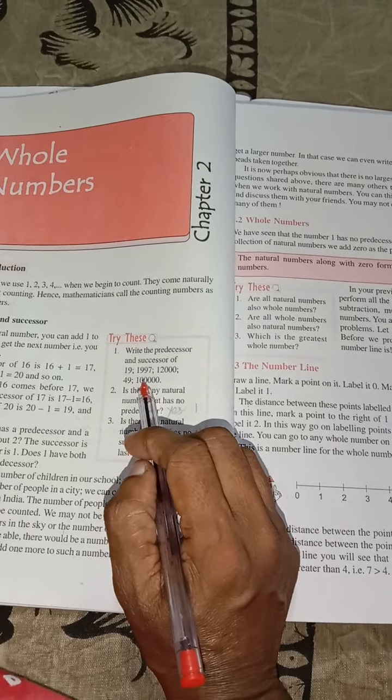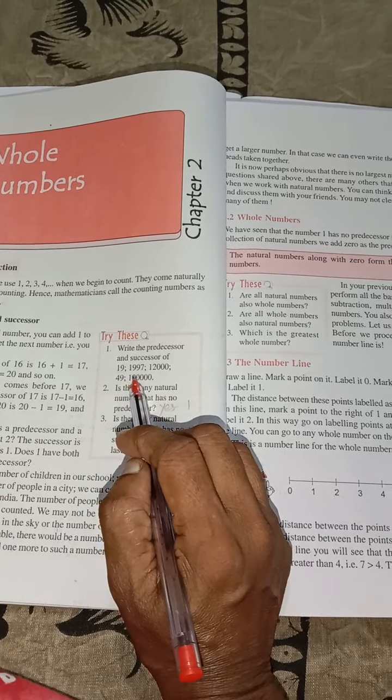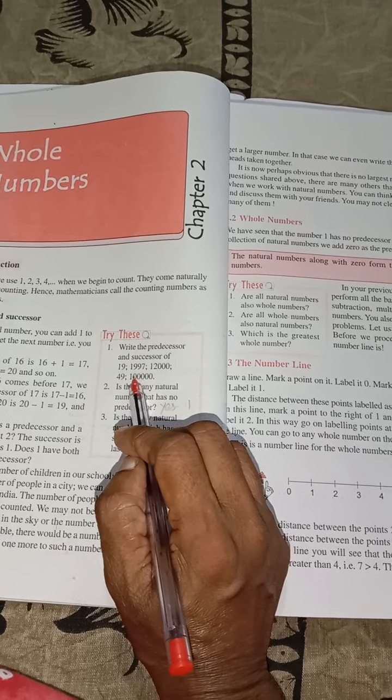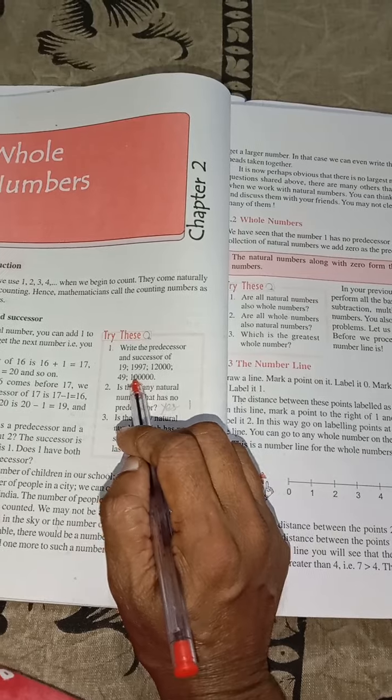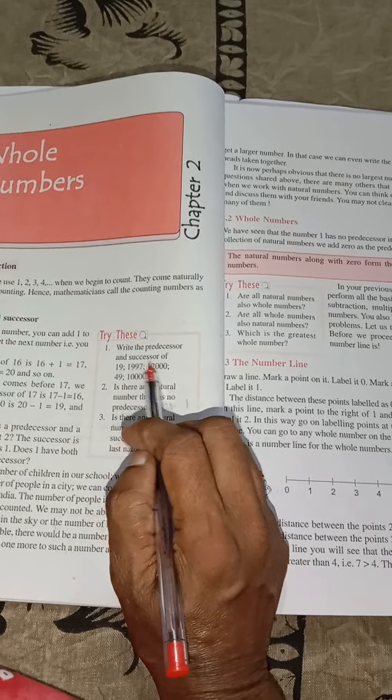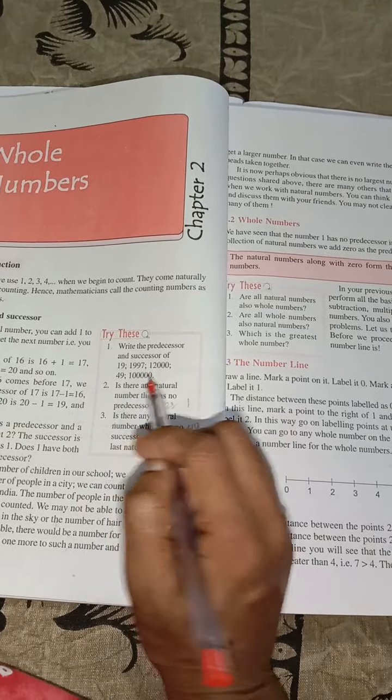And 1 lakh. 1 lakh predecessor is 99,999. That is the predecessor for 1 lakh. And successor is 1 lakh 1.